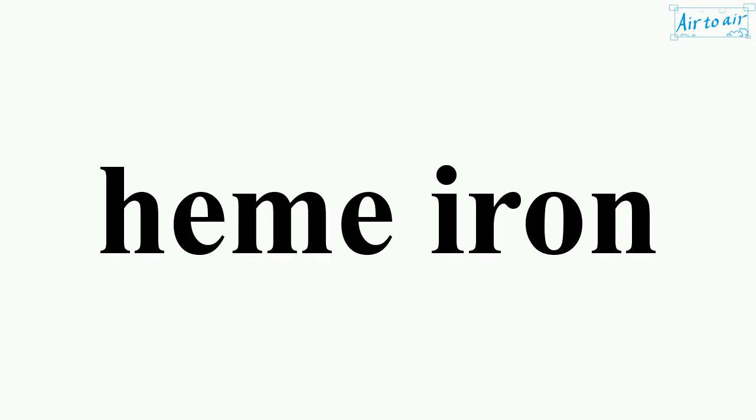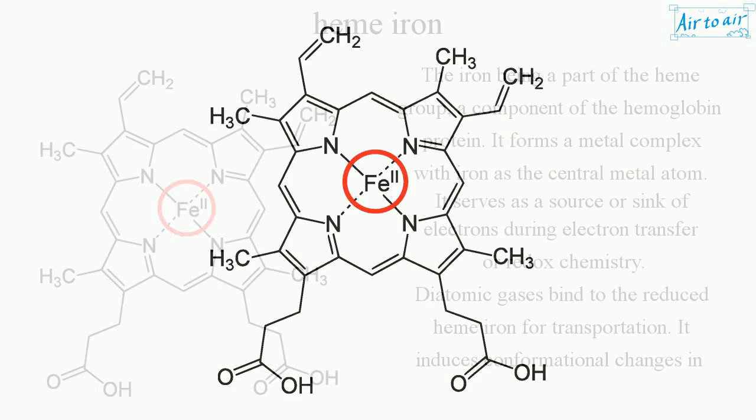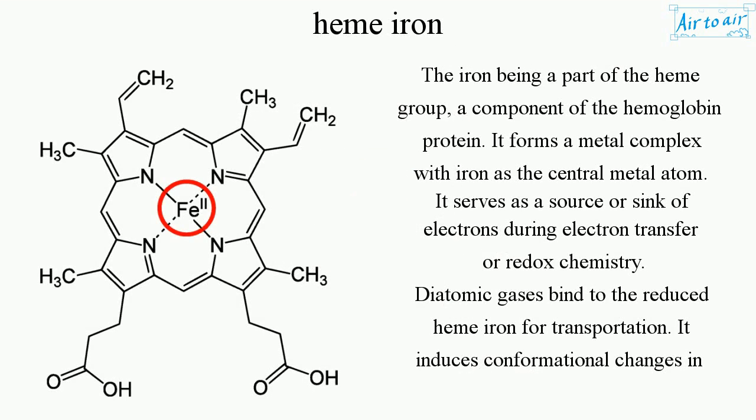Heme iron. The iron being a part of the heme group, a component of the hemoglobin protein. It forms a metal complex with iron as the central metal atom. It serves as a source or sink of electrons during electron transfer or redox chemistry.